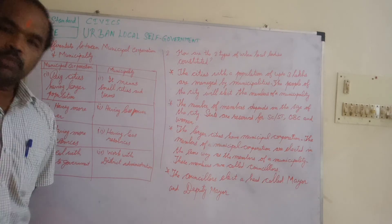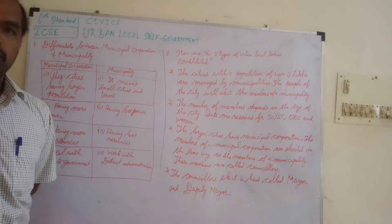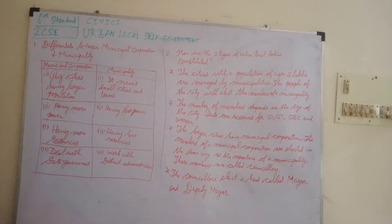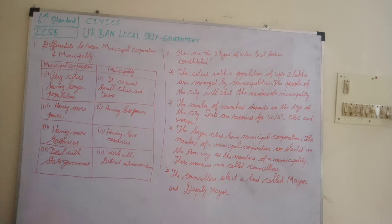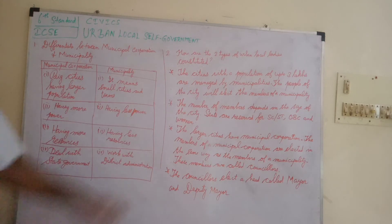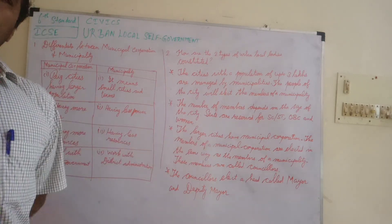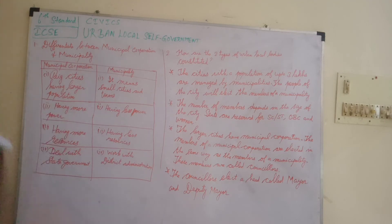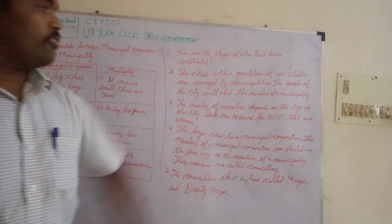Cities with a population of up to 3 lakhs are managed by municipalities — for example, Pambal, Tirumangalam, Virudhunagar, Chengalpattu, Viluppuram, Cuddalore, Chidambaram. In Chennai, which is a municipal corporation, larger cities have municipal corporations with more than 30 to 40 lakh people.